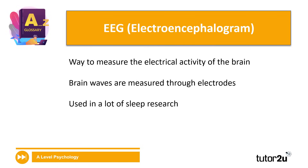Let's start with electroencephalograms, which are referred to as EEGs. These are ways to measure the electrical activity in the brain. There are lots of different types of brain waves in the brain and these are measured through electrodes which will be placed on the scalp or the temples of the head. You'll find these used quite a lot in sleep research, as you'll come to look at when you do things like circadian rhythms and ultradian rhythms as well.